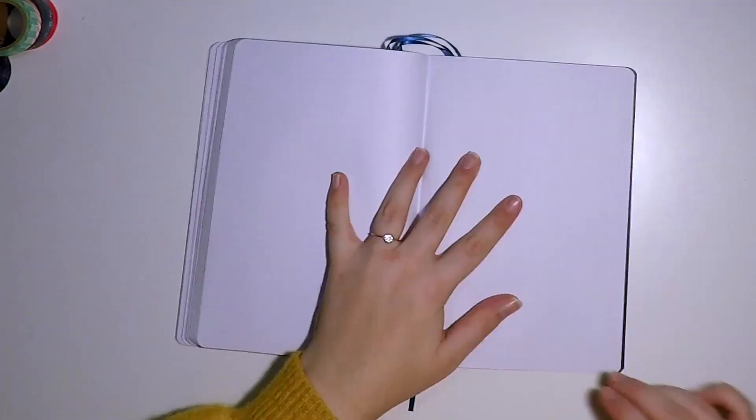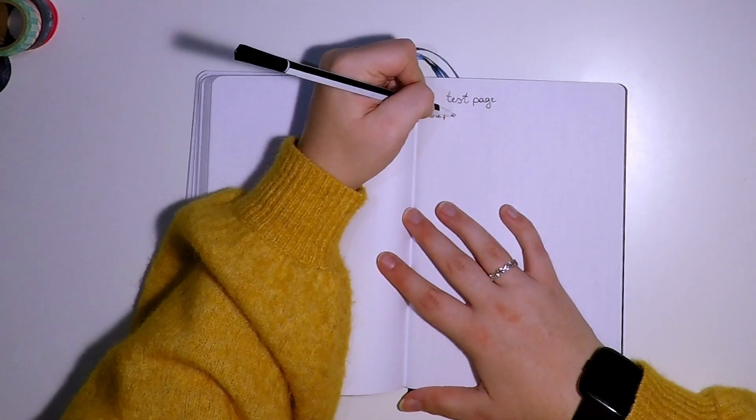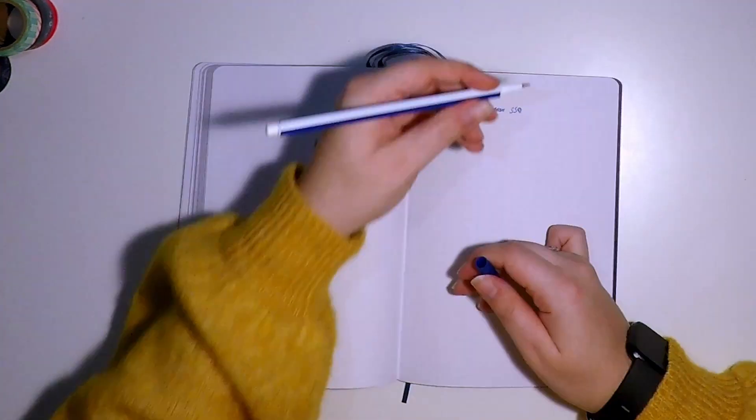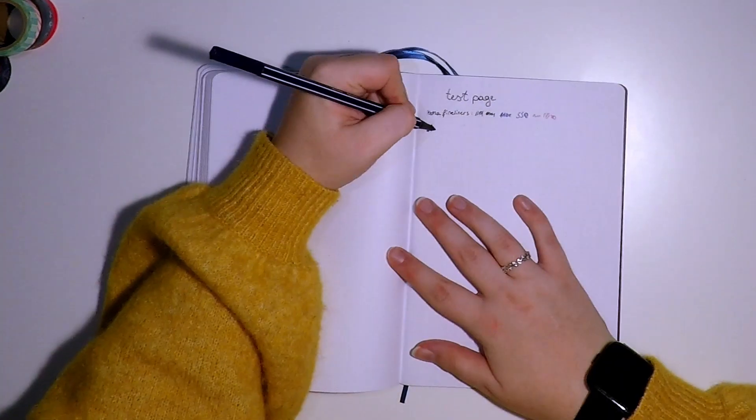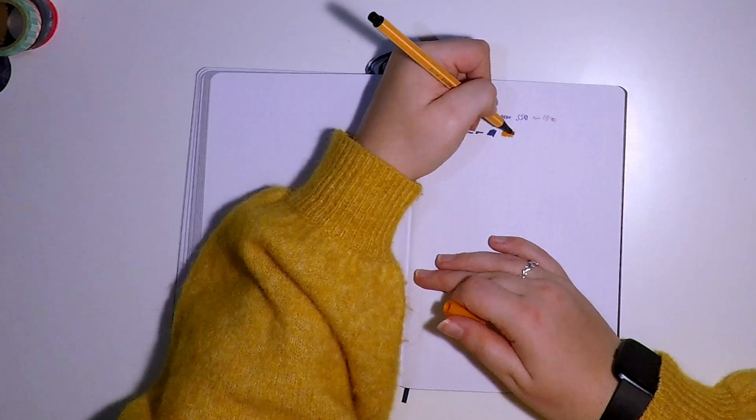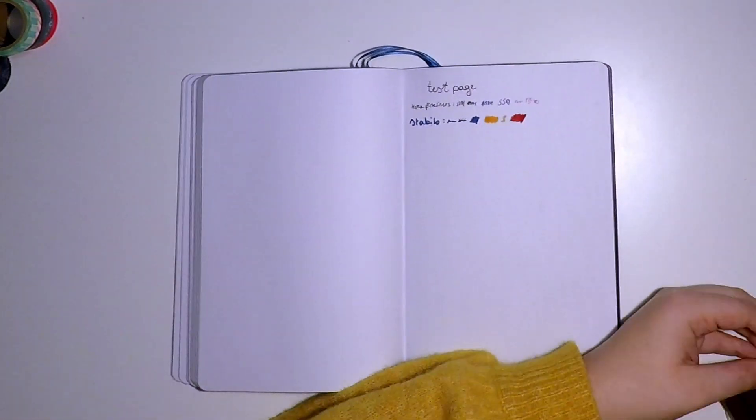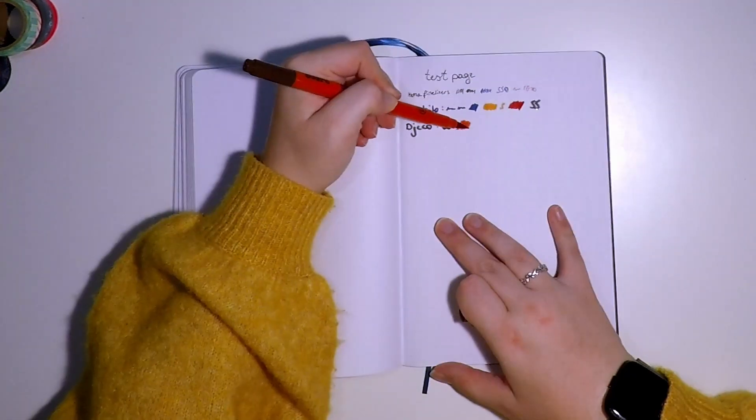The first thing that I did was make a test page on the last page of my bullet journal. I thought this would be helpful for me so I could see if the pens would bleed through the page.